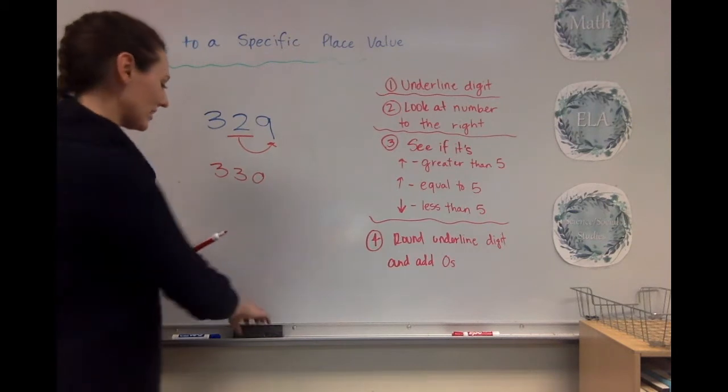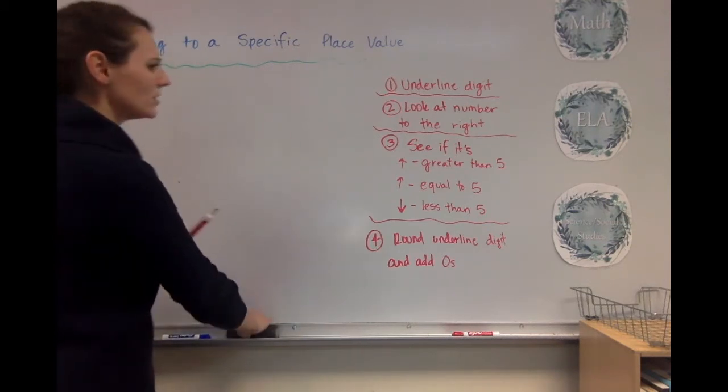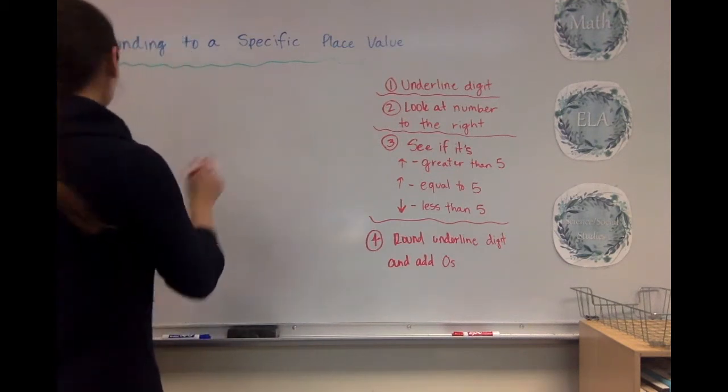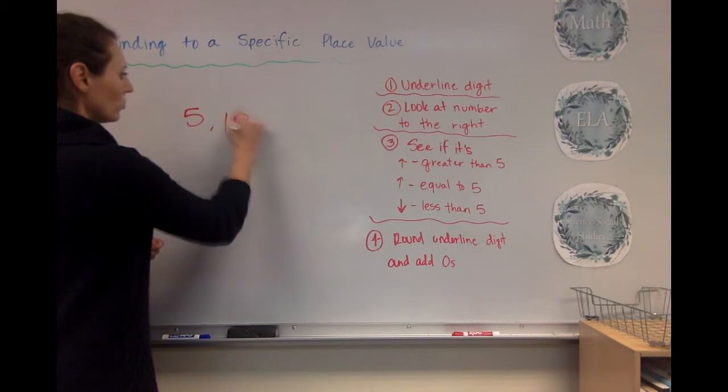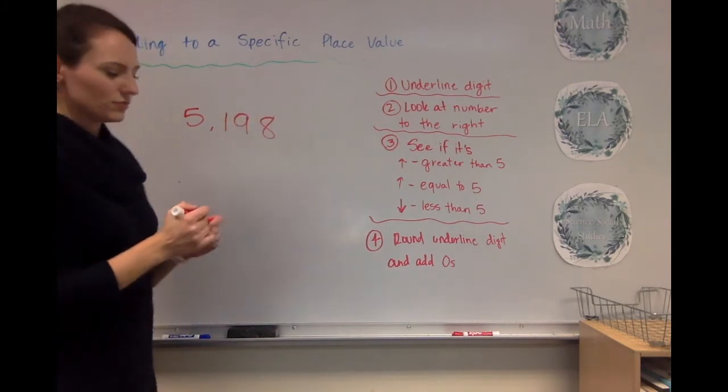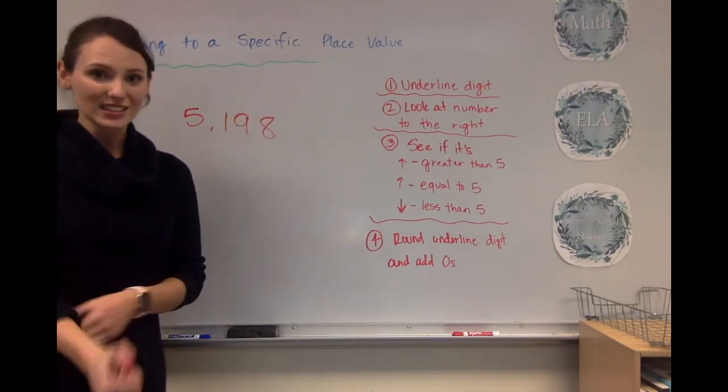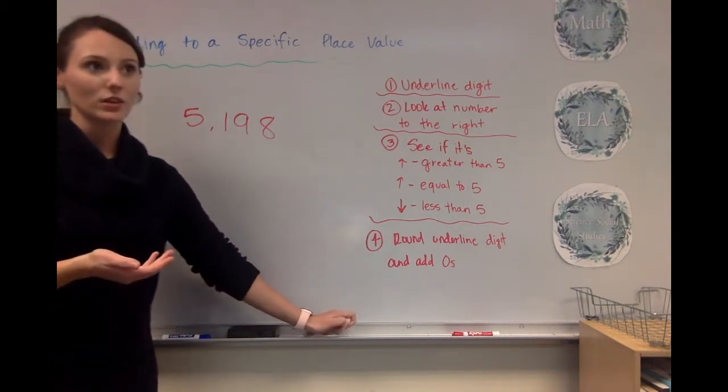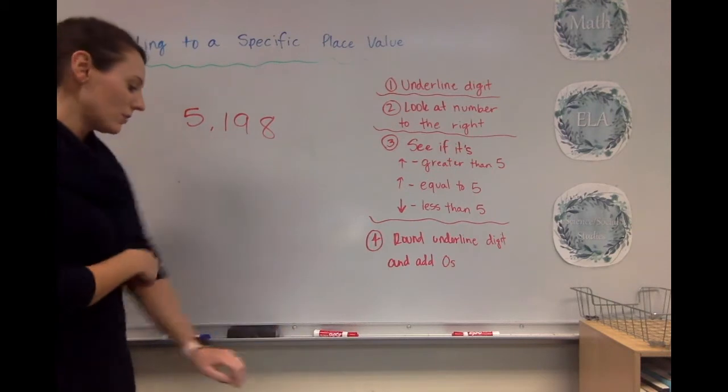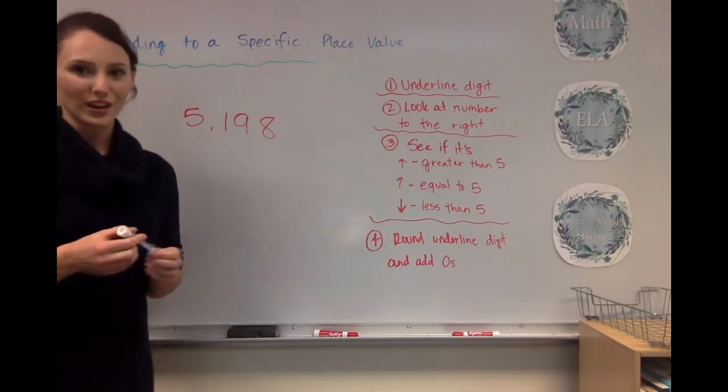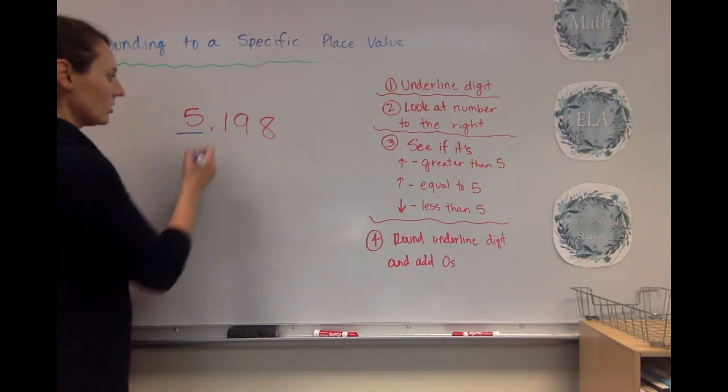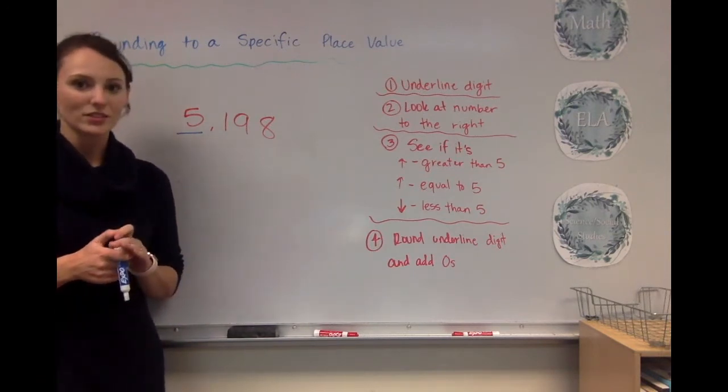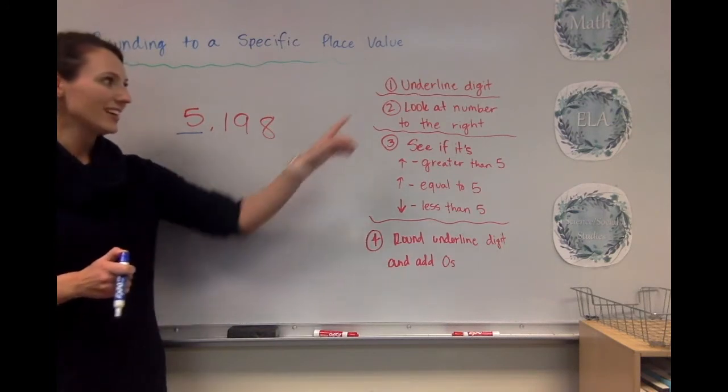Okay, let's do another number. Let's do a little bit bigger this time. Let's do 5,198. And let's say this time we're going to round it to the thousands place. So I'm going to underline that digit or that place. And I see the five is in my thousands place, so I have underlined that.